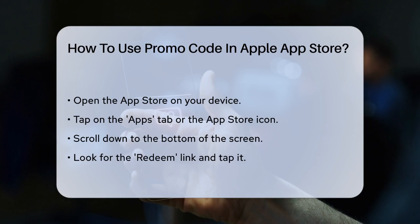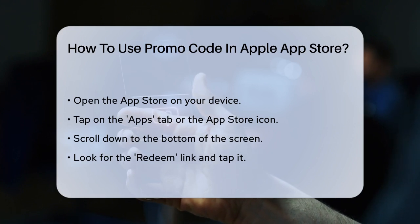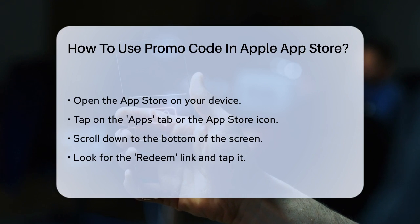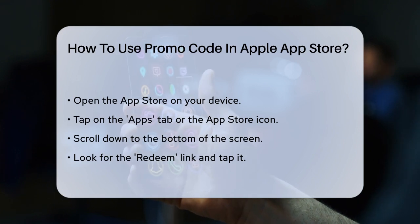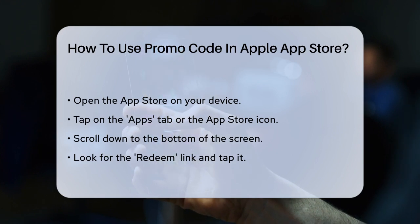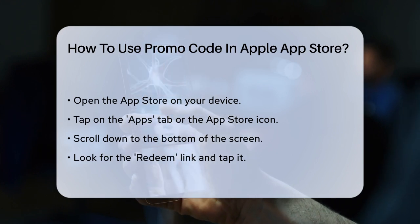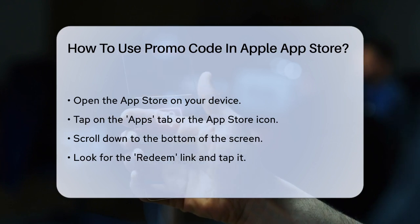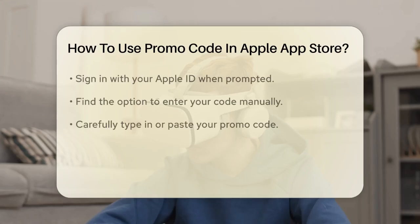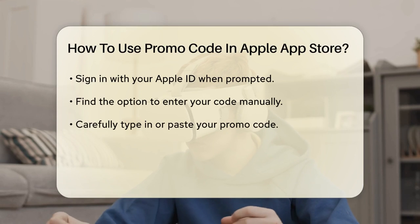First, open the App Store on your device. You'll see several tabs at the bottom, but you need to focus on the one that says Apps, or sometimes just the App Store icon itself. Tap on it to go to the home page of the App Store. Now scroll down to the very bottom of the screen. Here, you'll find a link that says Redeem. Tap on this link to start the process of entering your promo code.